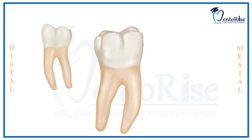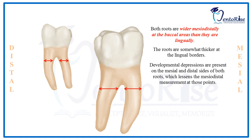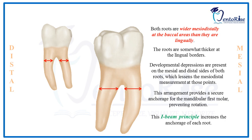There are certain peculiarities to remember about the roots of the permanent mandibular first molar. First, comparing the meso-distal dimensions of both roots buccally versus lingually, the buccal dimensions are greater than the lingual dimensions. Second, the roots are thicker at the lingual borders. Third, developmental depressions are present on the mesial and distal surfaces of the mesial and distal roots individually, making the meso-distal dimension less at those points. These features collectively provide secure anchorage for the permanent mandibular first molar, preventing rotation. This is called the eye beam principle, which increases the anchorage of each root.